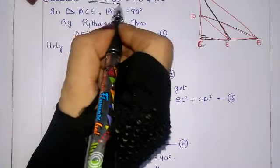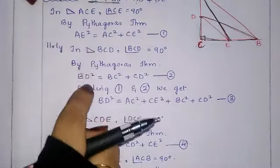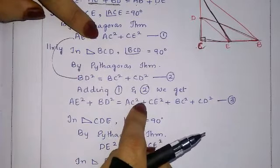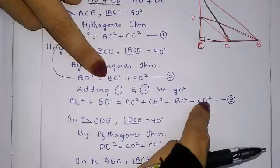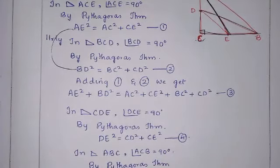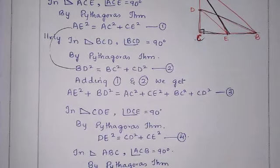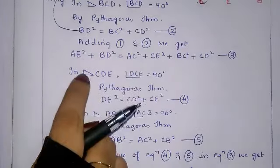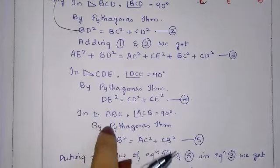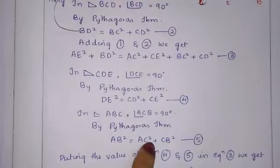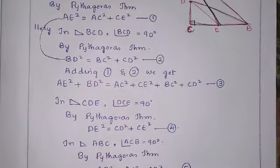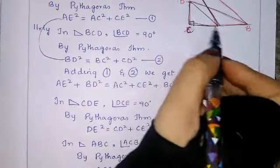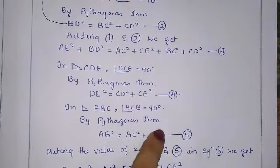Adding equations 1 and 2: AE² + BD² = AC² + CE² + BC² + CD² — equation 3. In triangle ABC, AB² = BC² + AC² — equation 5. In triangle DCE, DE² = CD² + CE² — equation 4.